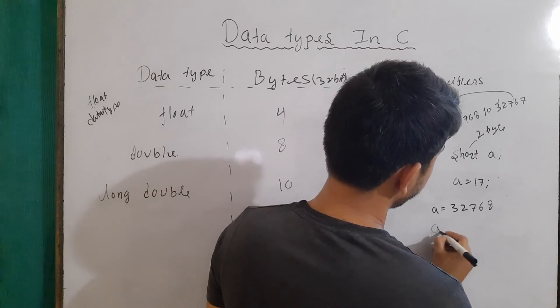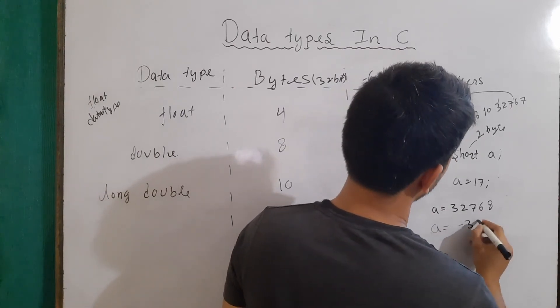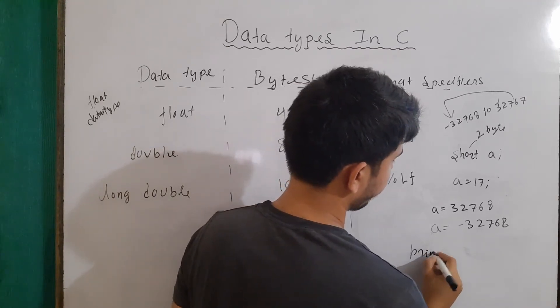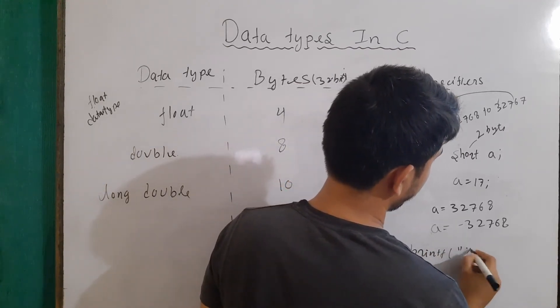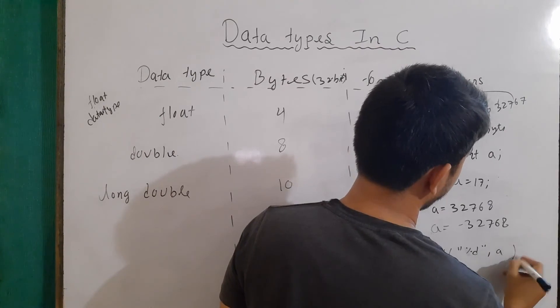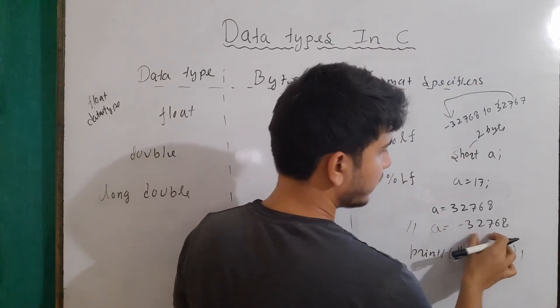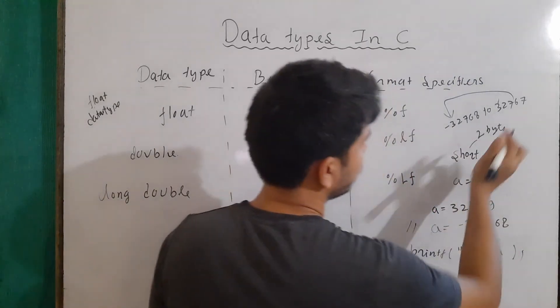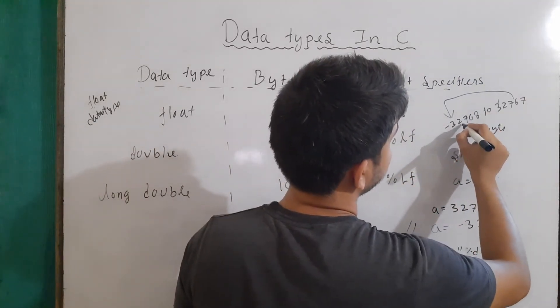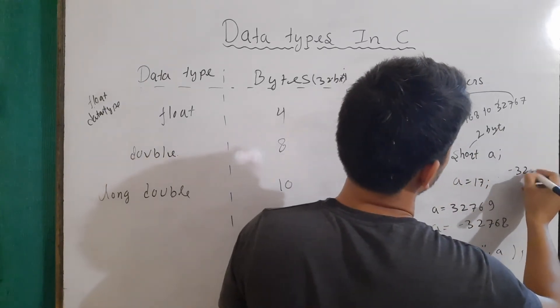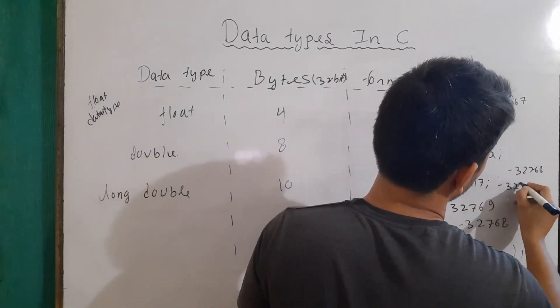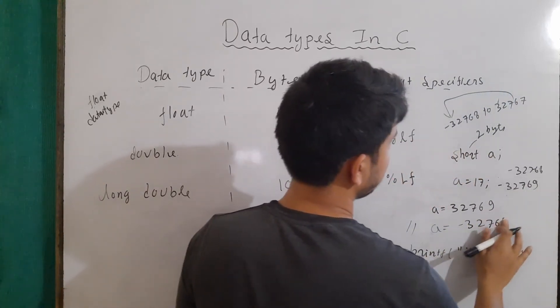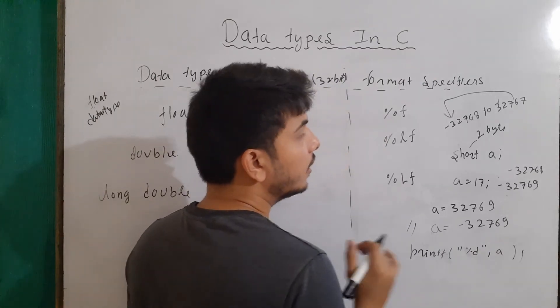The next number would be this one. So here implicitly it will be assigned with the value of 32768 minus 32768. If you do printf %d and a, then it will give us output as minus 32768. Similarly, let's say I'm writing here 69. So the first number could be minus 32768, and then the number would be minus 32769. So in this case, our output will be minus 32769.